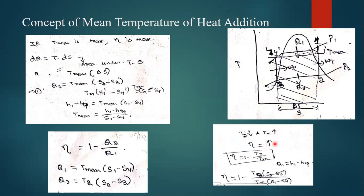If this is higher value, how much will it become? For suppose you take some value... What we have: efficiency is equal to 1 minus T2 by T mean, right?